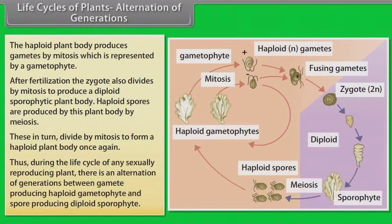Thus, during the life cycle of any sexually reproducing plant, there is an alternation of generations between gamete-producing haploid gametophyte and spore-producing diploid sporophyte.